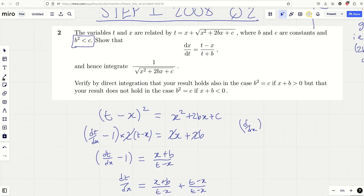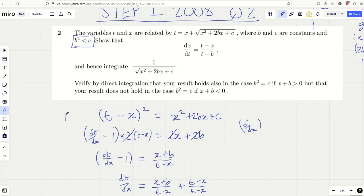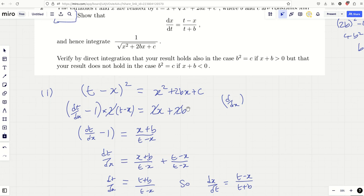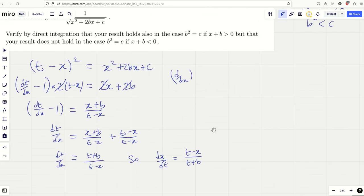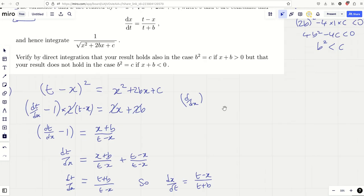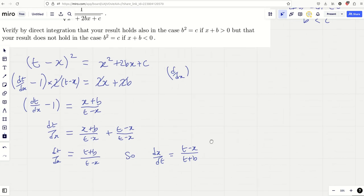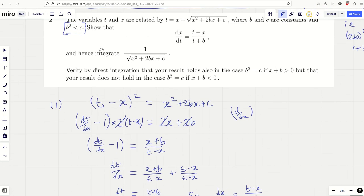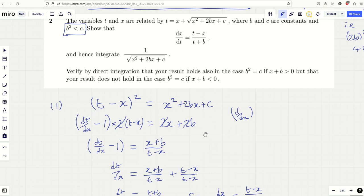And therefore you get t plus b on the top and t minus x on the bottom. And then I flipped it because I think they found dx by dt. Yeah, and it flips to the answer. So dx by dt is t minus x over t plus b. Just check it. We're good. Okay, I did that and I was feeling pretty clever with myself because that answer popped out straight away nicely. And then I got to this bit and I was like, um, you know.